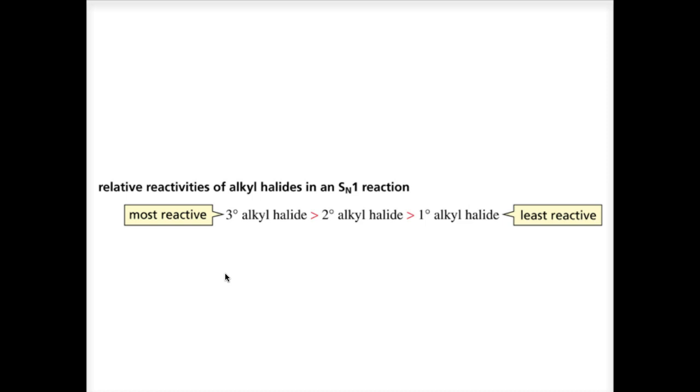Primary carbocations and methyl cations are so unstable that primary alkyl halides and methyl halides do not undergo SN1 reactions. You can see on this slide most reactive is over on the left, tertiary alkyl halides, and the least are over here on the right, primary alkyl halides.